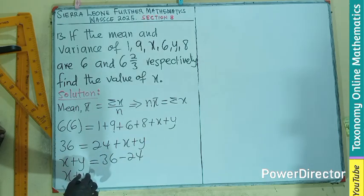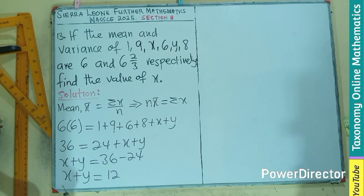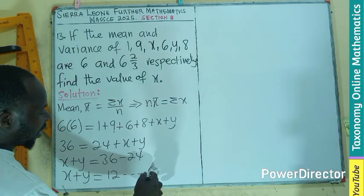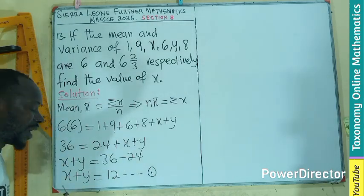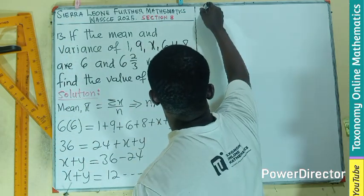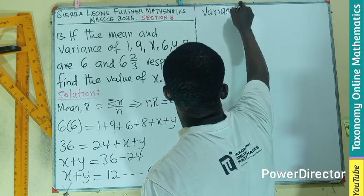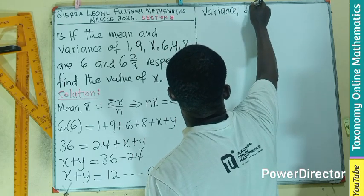We can have our x plus y equals to 36 minus 24. So, I think fast forward. This will be 12, right? If you look at it carefully, that will be your first equation.